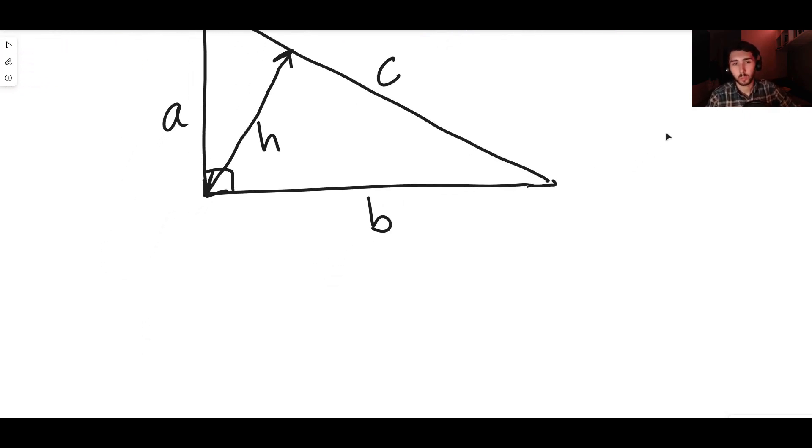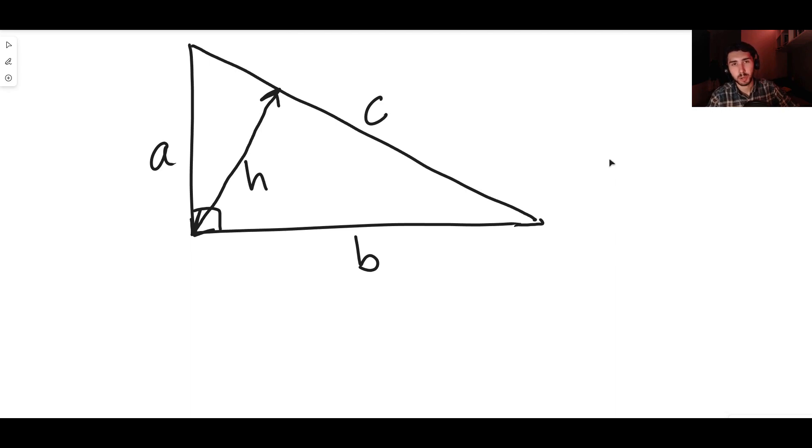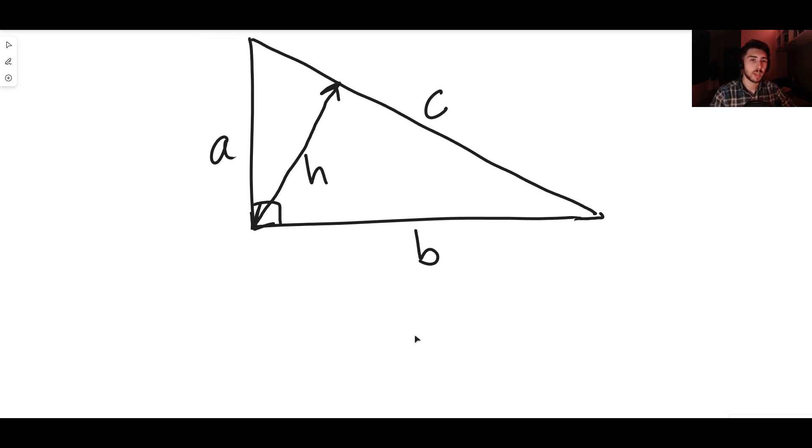First things first, we want to essentially come up with an expression, an equation that links a, b, and h together. Well, we can express the area of this triangle in two different ways. The area of the triangle is of course just going to be one half base times height: one half c times h, because c is the base and h is the height.